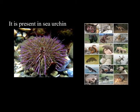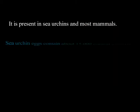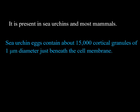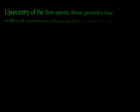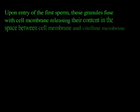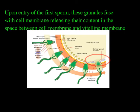The slow block is present in sea urchins and most mammals. Sea urchin eggs contain about 15,000 cortical granules of 1 micrometer diameter just beneath the cell membrane. Upon entry of the first sperm, these cortical granules fuse with the cell membrane, releasing their contents into the space between the cell membrane and the vitelline membrane.